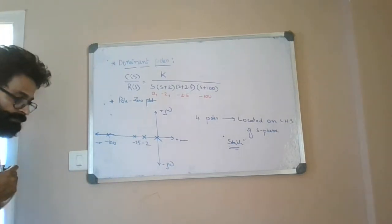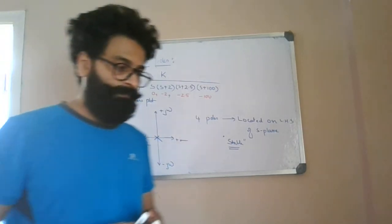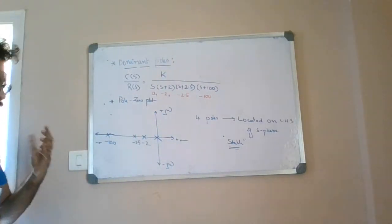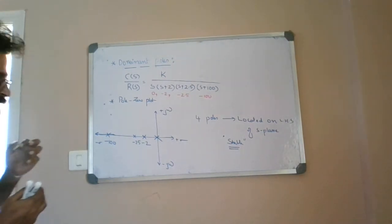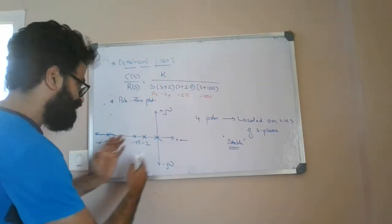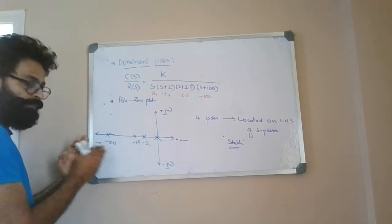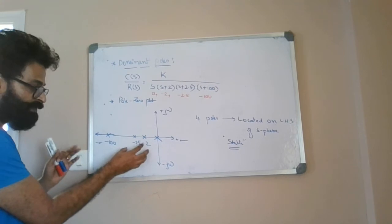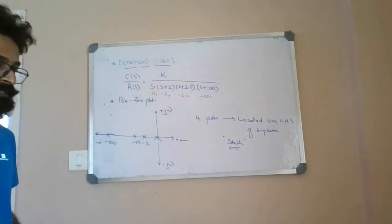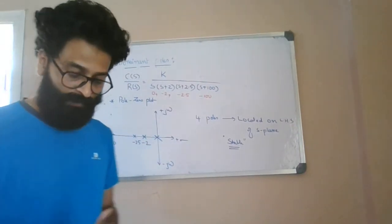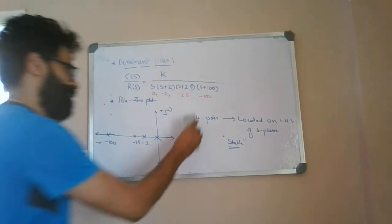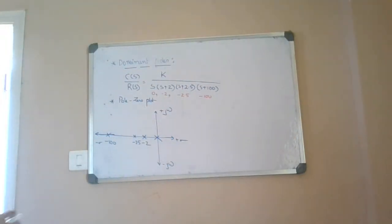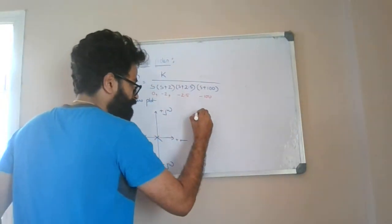Now if we investigate the effect of each pole on settling time, we find that poles located far away from the imaginary axis will take lesser settling time. On the other hand, poles which are very close to the imaginary axis are going to take more settling time, because of the concept of relative stability.